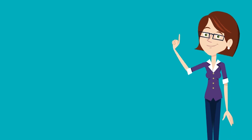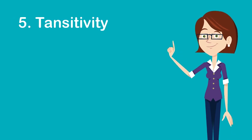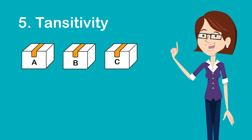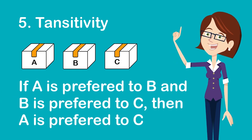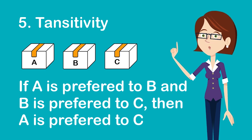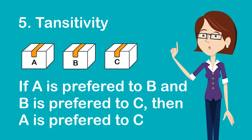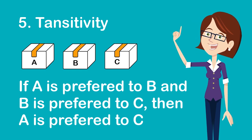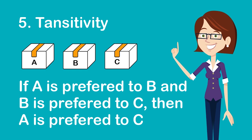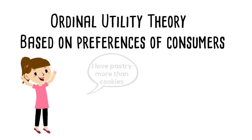Number five, transitivity — given three bundles A, B, and C, if a consumer prefers bundle A to bundle B and prefers bundle B to bundle C, then the consumer will prefer bundle A to bundle C. A consumer may also be indifferent between any two or more bundles. Given these assumptions, the Ordinal Utility Theory is based on preferences of consumers.